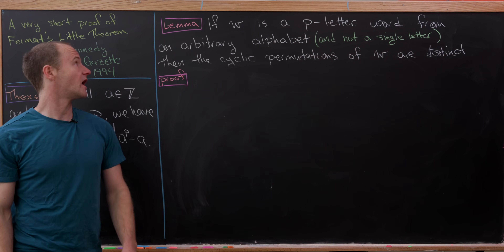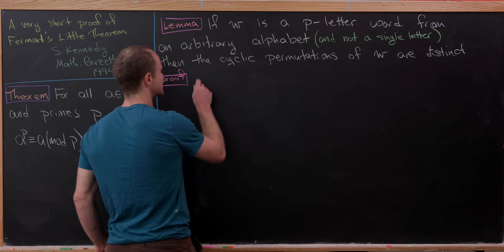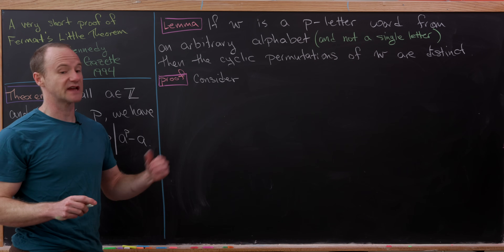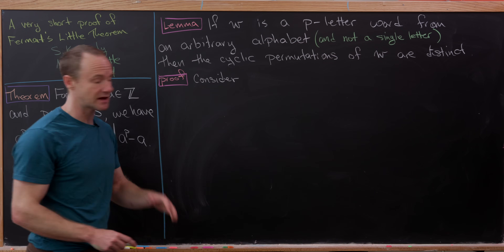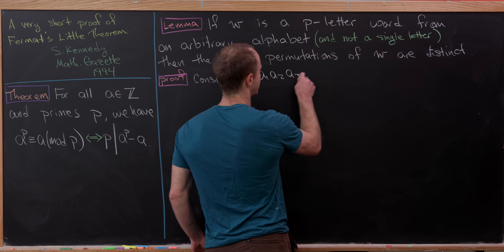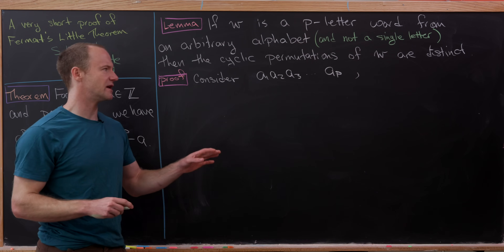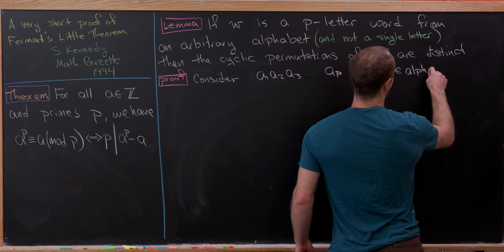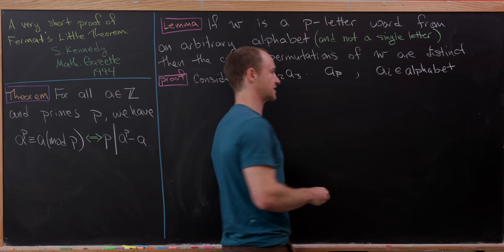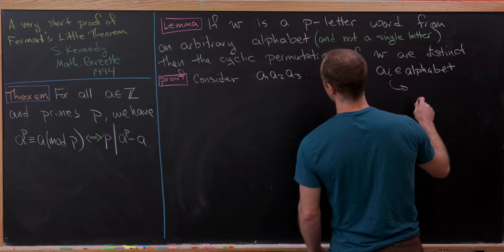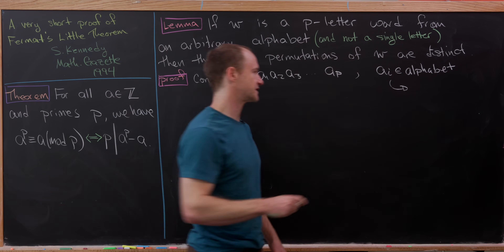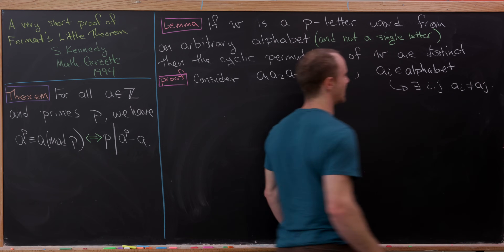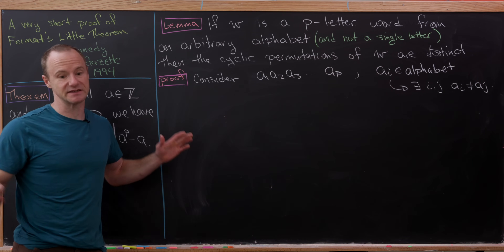Now for the proof of this lemma. Let's consider a word a1, a2, a3, up to ap, where each ai comes from some alphabet — some list of characters. We'll also say that not all letters are the same: there exist i and j such that a_i is not equal to a_j. So this isn't just a string of p identical letters.